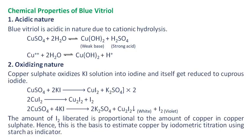Chemical properties of blue vitriol. Acidic nature: blue vitriol is acidic in nature due to cationic hydrolysis. Oxidizing nature: copper sulfate oxidizes potassium iodide solution into iodine and is itself reduced to cuprous iodide. The amount of iodine liberated is proportional to the amount of copper in copper sulfate. Hence, this is the basis to estimate copper by iodometric titration using starch as indicator.